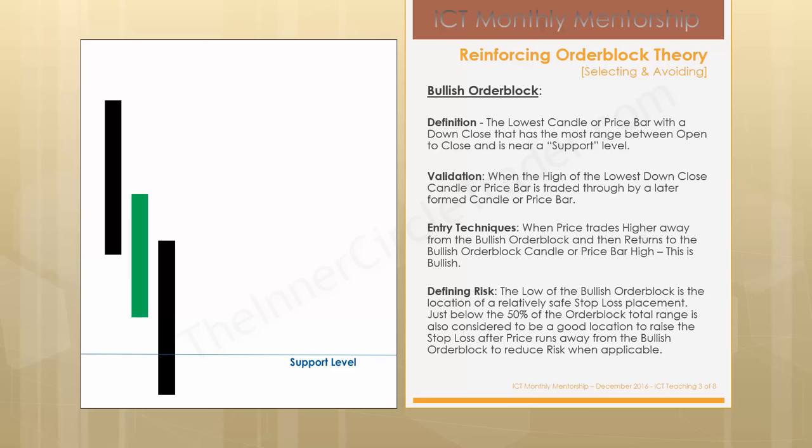Once price trades down into the support level — and it could trade to it or just through it, it doesn't make a difference — what we're doing is waiting for price to show us indications that smart money, or a large body of big flows, or those individuals on an institutional level that have a whole lot more money collectively than we do, when they participate in a move it'll be seen in price action. So when we have this down candle, we're already assuming that this may be a bullish order block. We don't know that yet until a later time when another candle trades through it.